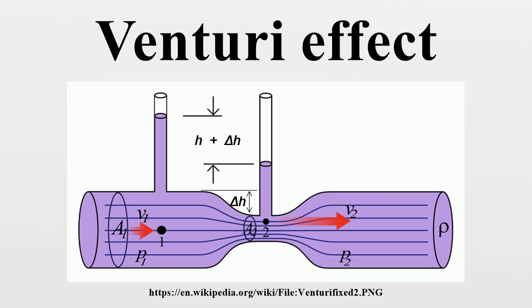A Venturi can also be used to mix a liquid with a gas. If a pump forces the liquid through a tube connected to a system consisting of a Venturi to increase the liquid speed, a short piece of tube with a small hole in it and last a Venturi that decreases speed, the gas will be sucked in through the small hole because of changes in pressure.